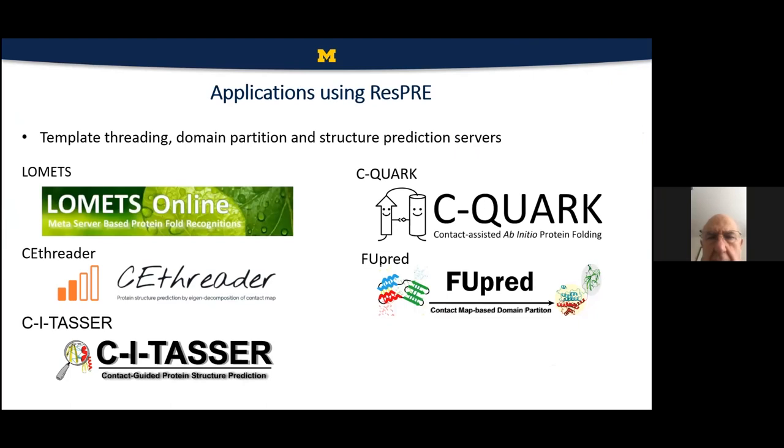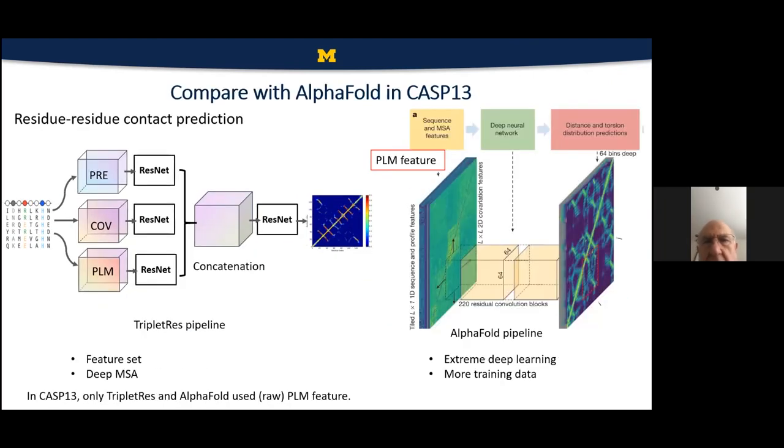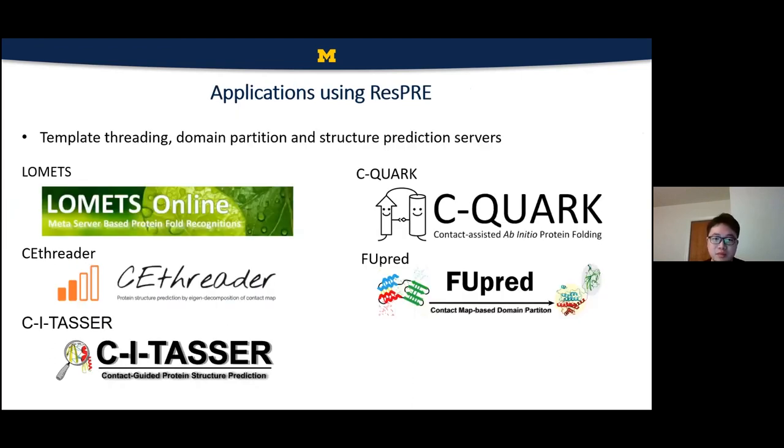So that was CASP13. How many proteins did they use in CASP14? In CASP14, we have like 25,000. And AlphaFold has like 200,000. Ten times. Yes. And we believe that the data is very important. So we want to examine that. Thank you.